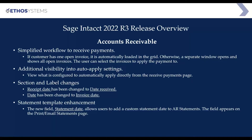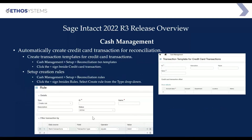Within cash management, you have the ability to automatically create credit card transactions for reconciliation. Within cash management, go to Setup and Reconciliation, then Transaction Templates. You can create various rules — for example, if it is from a specific vendor, amount, or expense account, the transaction gets created and reconciled for you. If you have any questions, we'd be happy to help you set up these templates to streamline your credit card reconciliation.